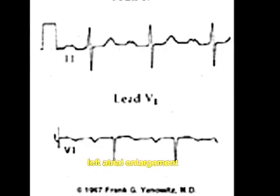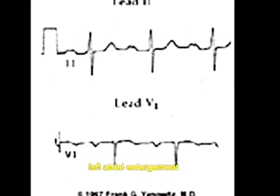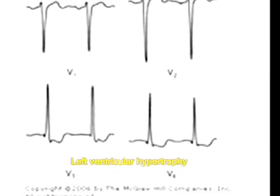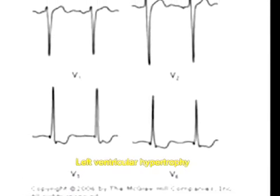Now let us see left ventricular hypertrophy. In left ventricular hypertrophy you can see big R and S waves. In fact, if you combine S and R it will be more than 35 millimeters. So whenever you see big S and R waves you should suspect left ventricular hypertrophy.